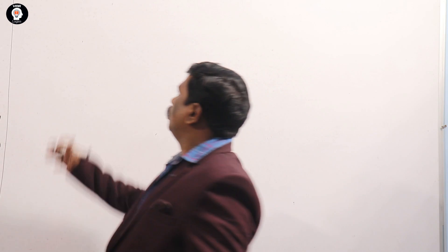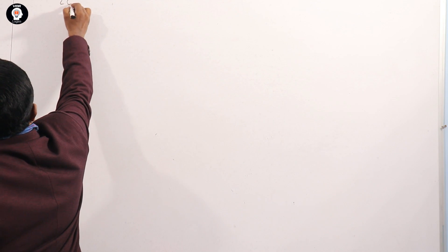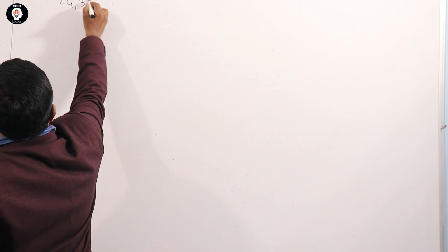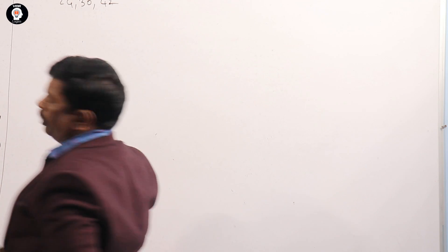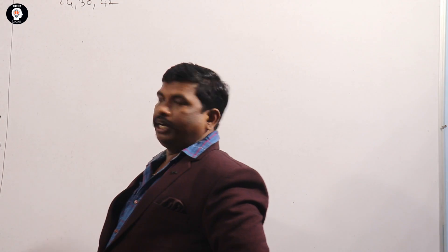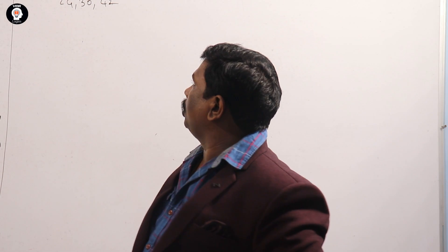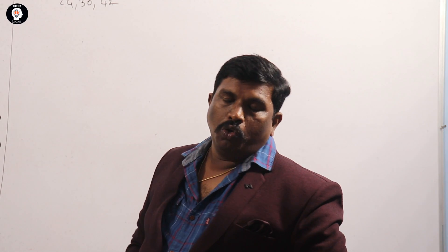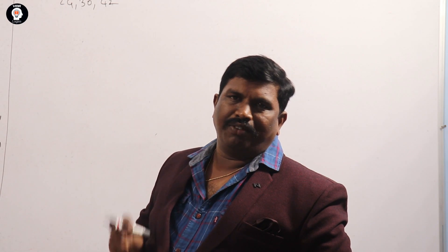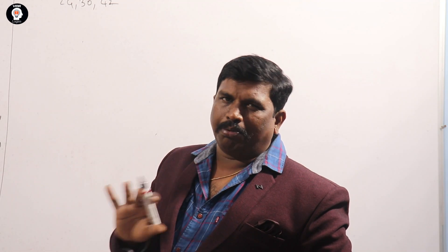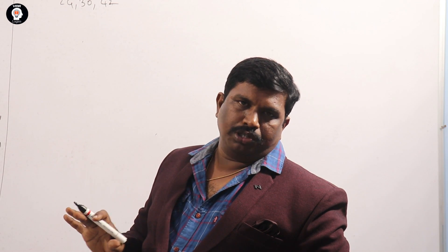How do you find HCF, GCD? Let me show you. First question: 24, 30, 42. I will explain the process one by one. We will follow a simple process.